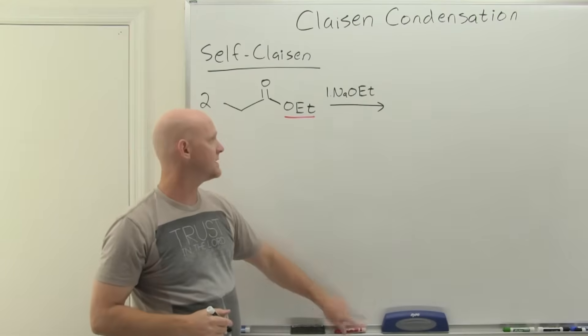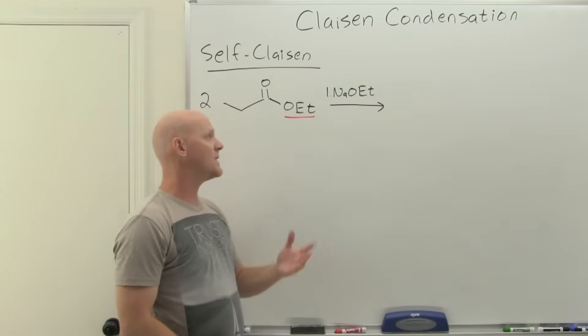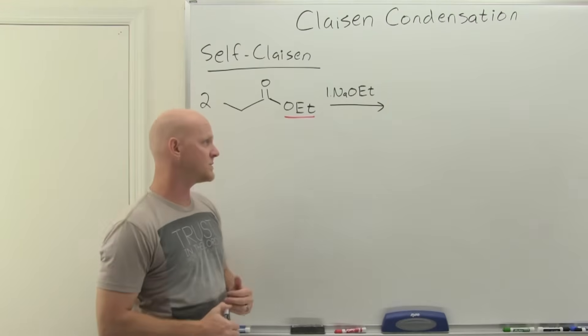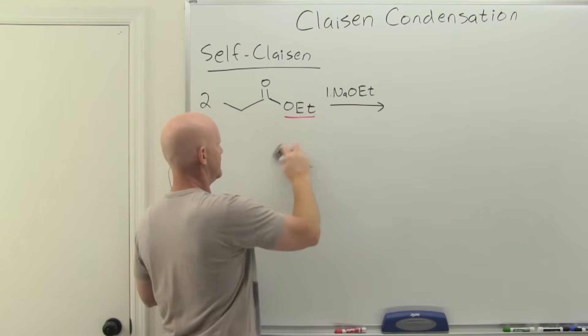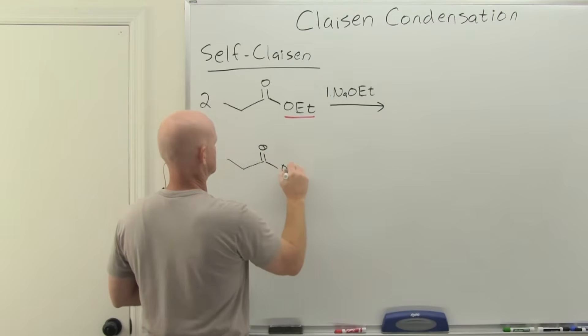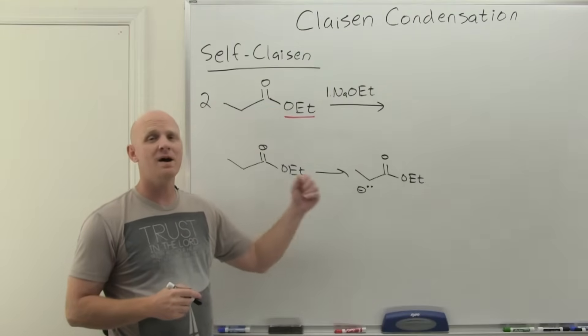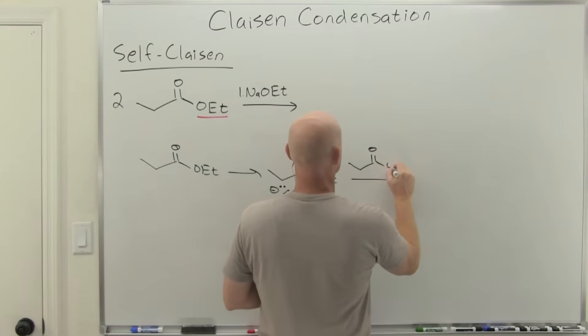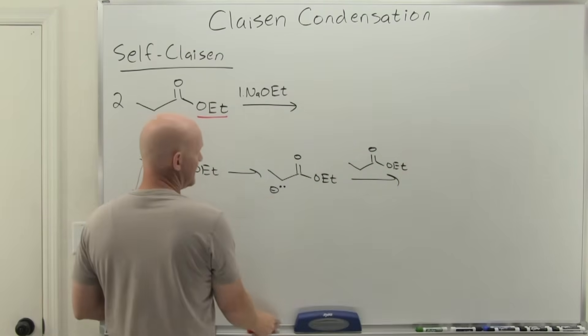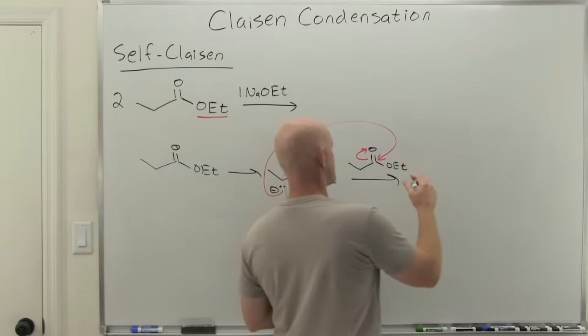If you've got an ester here like ethyl propanoate then you want to use ethoxide like sodium or potassium ethoxide as your base. That way you don't have to worry about nucleophilic acyl substitution giving you some mixture of different results. In this case you're gonna form your enolate. First thing you're gonna deprotonate that alpha carbon. Then that's gonna react with your second equivalent of your ester in a nucleophilic substitution reaction. We're gonna come in here, push those electrons up, get our tetrahedral intermediate.